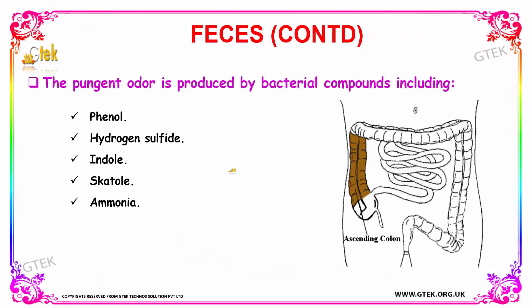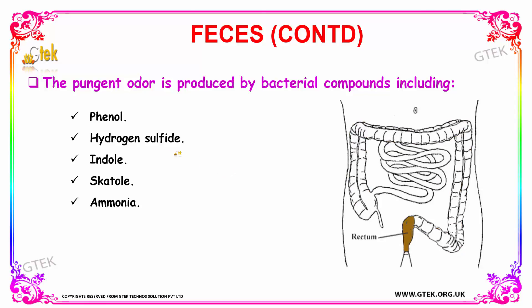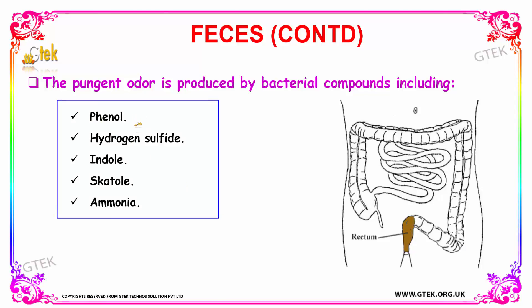Your feces has a pungent odor, and the odor is produced by bacterial compounds which include phenol, hydrogen sulphide, indole, ketone, and ammonia. These are the compounds which produce a pungent odor in the feces.